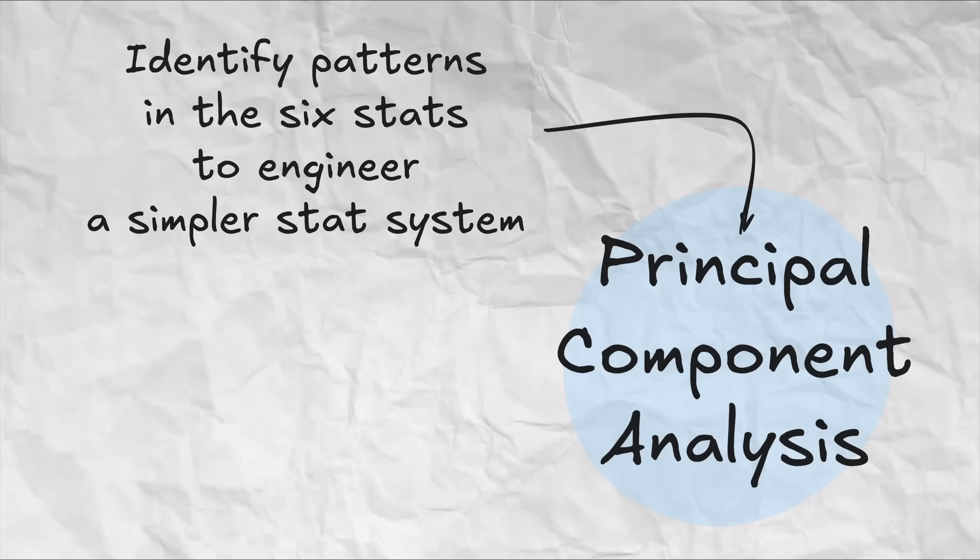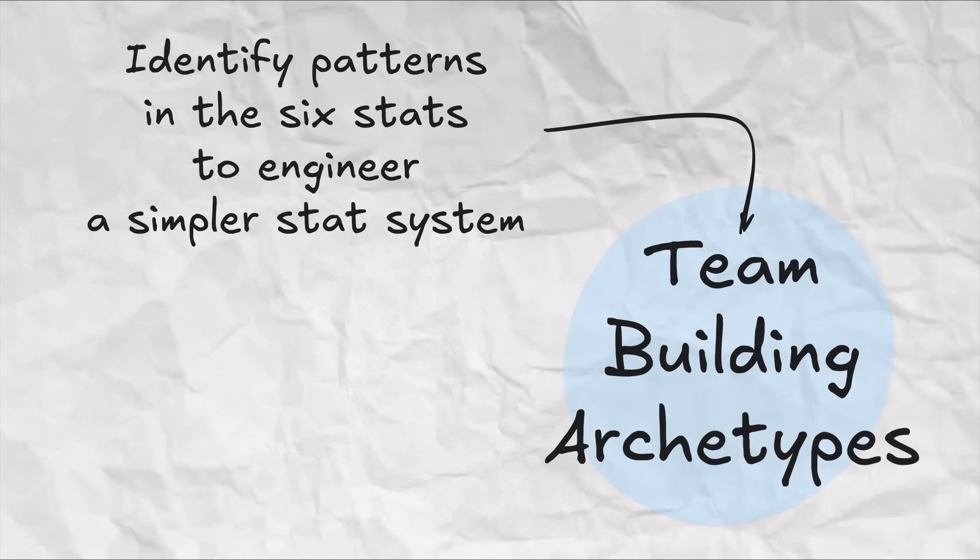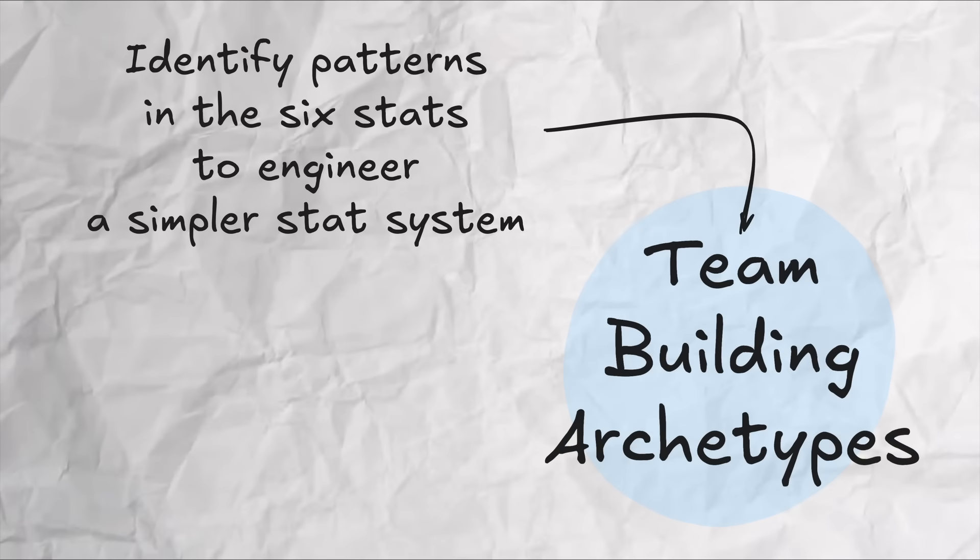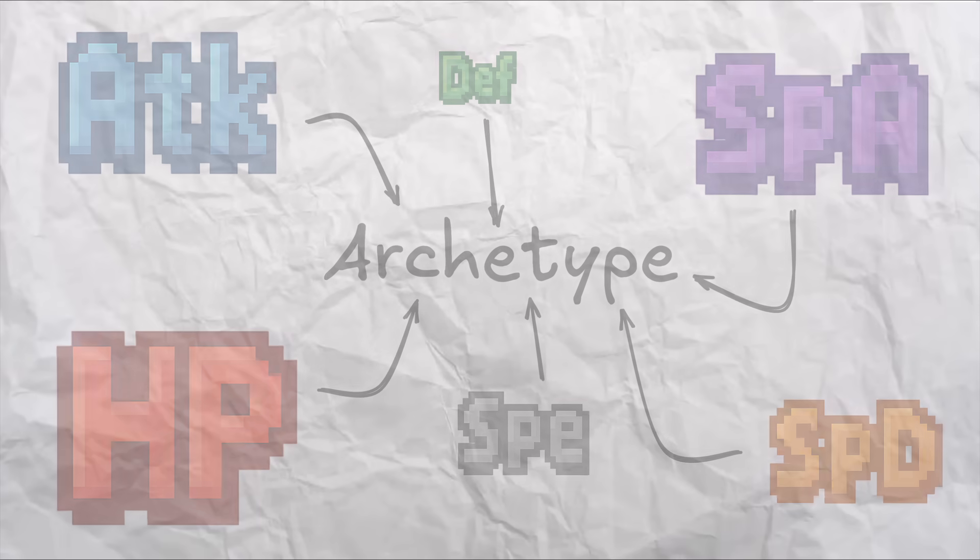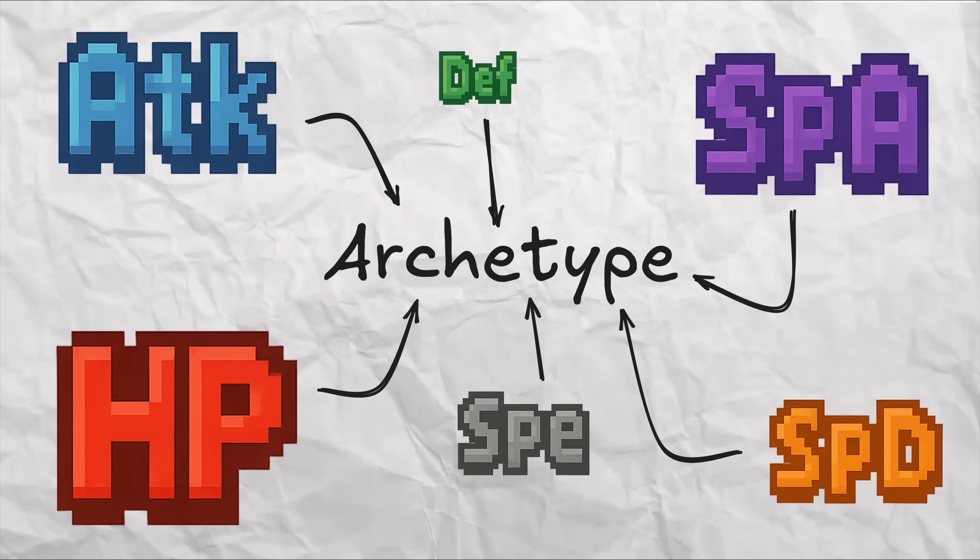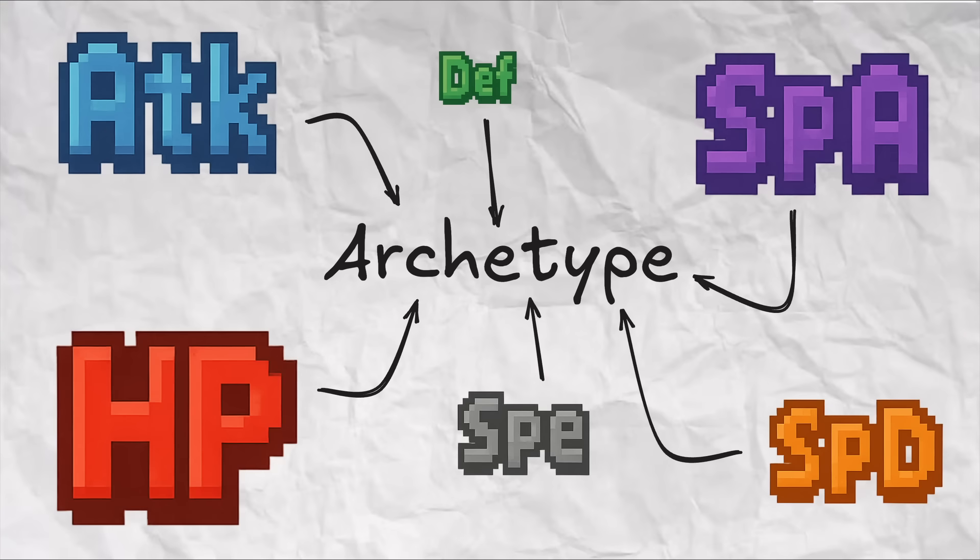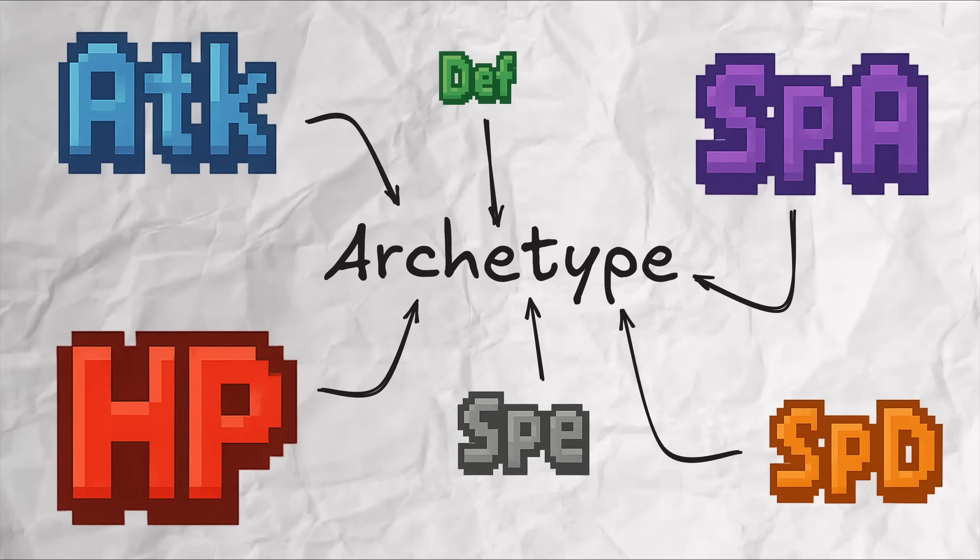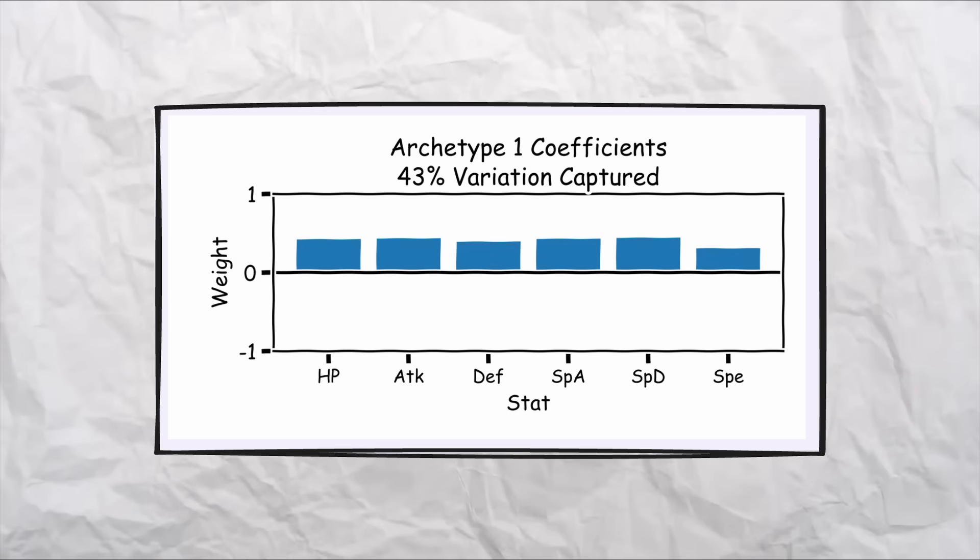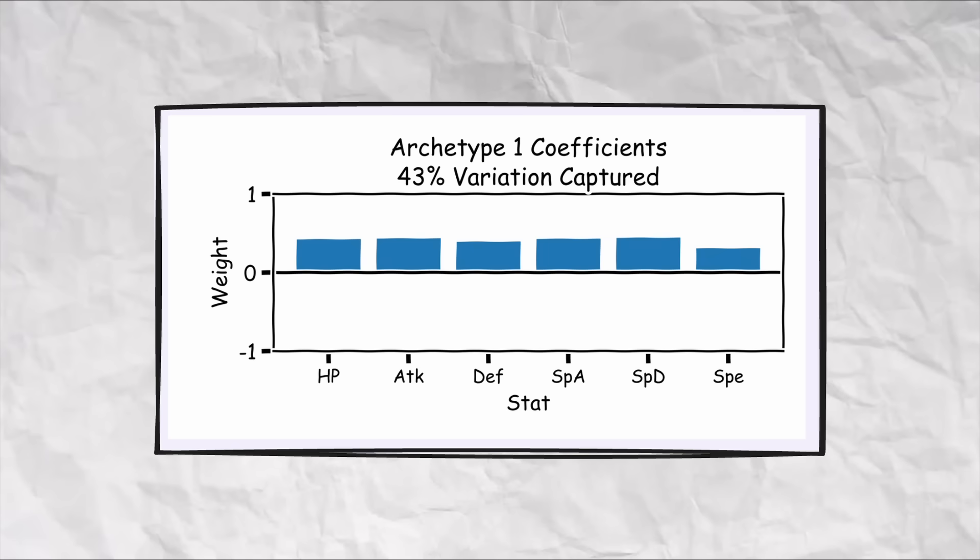All we really need to know about this method is that it generates a series of what are called principal components, which we can just call for the remainder of this video team building archetypes for reasons that are going to become clear real soon. Each archetype is going to be a weighted combination of the existing six stats and the weights on each of those existing six stats are cleverly chosen by the method to again capture as much variation as we can that exists out there in the existing stats in the existing Pokemon. For example, we see that the first archetype that's found by this method by itself already captures 43% of the variation across all of the stats across all these Pokemon.